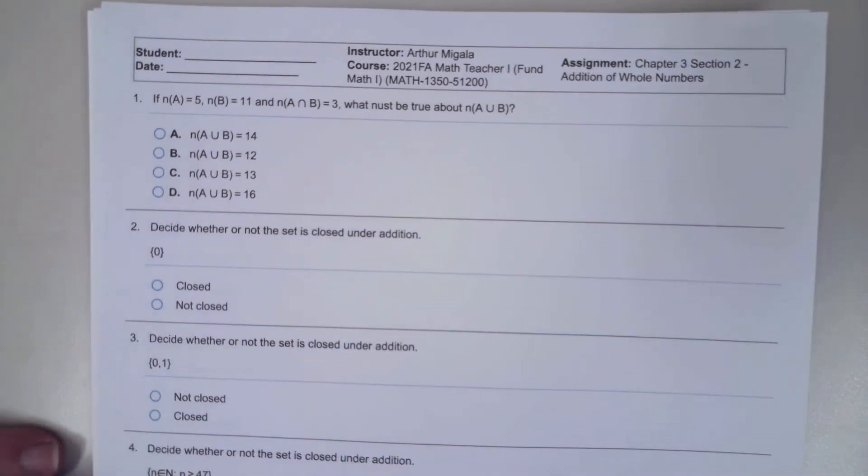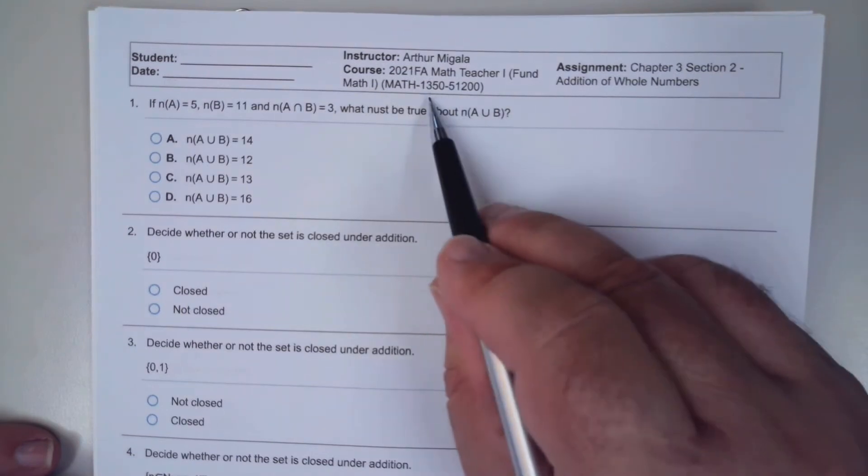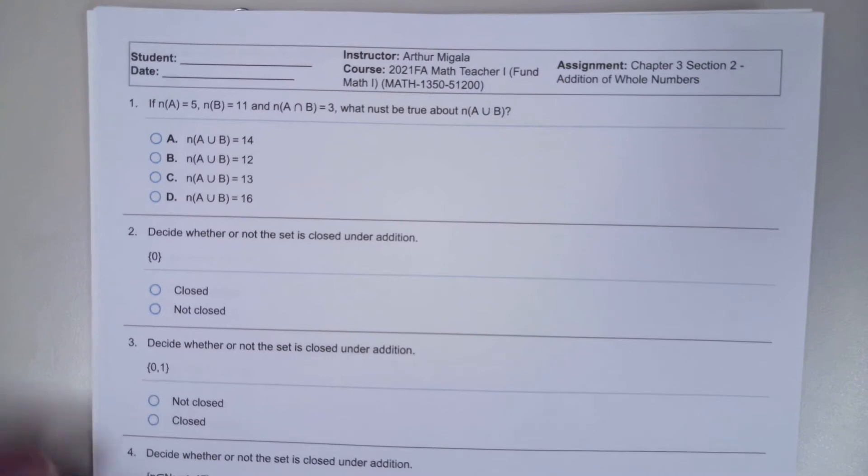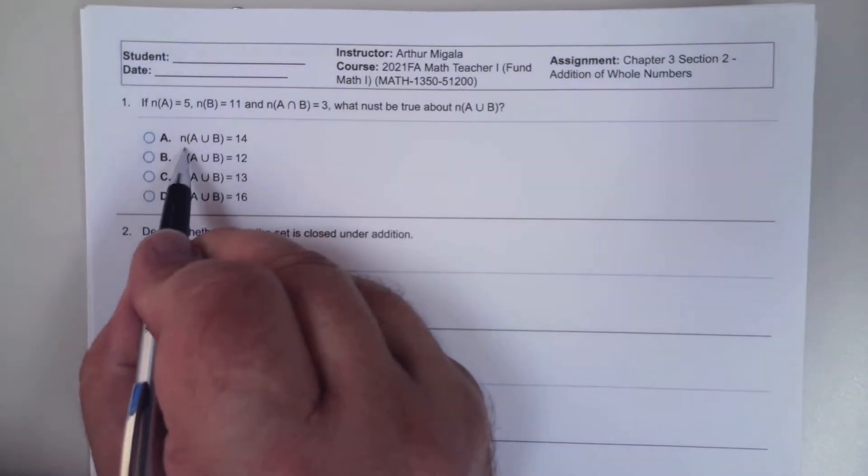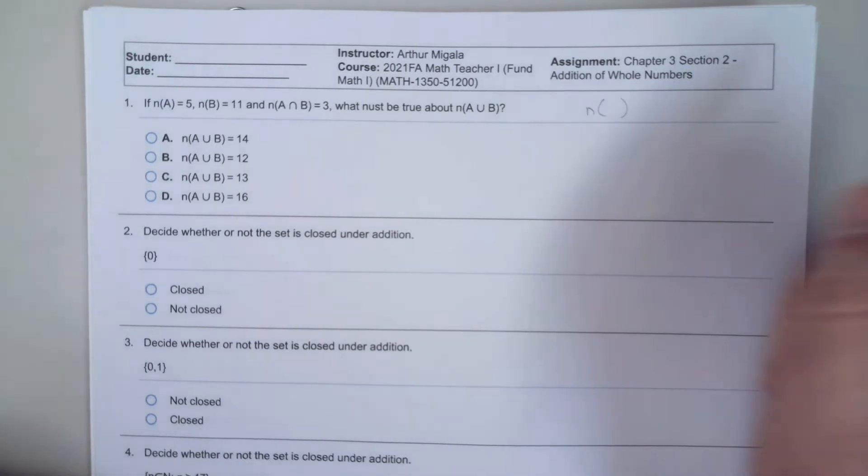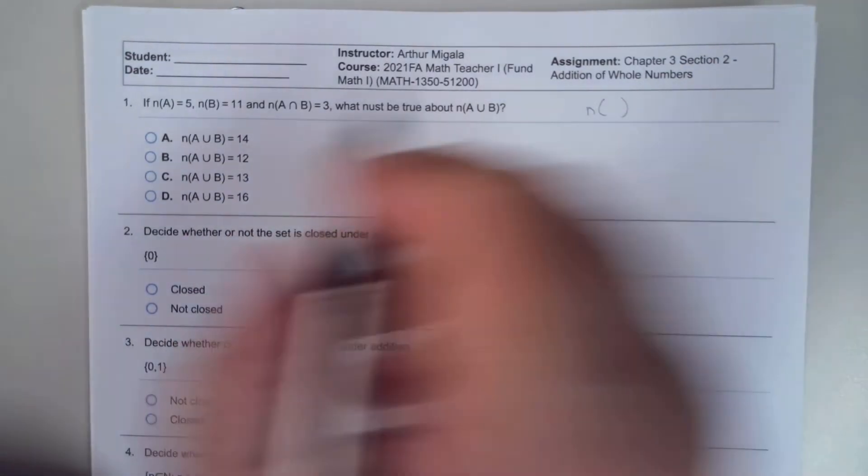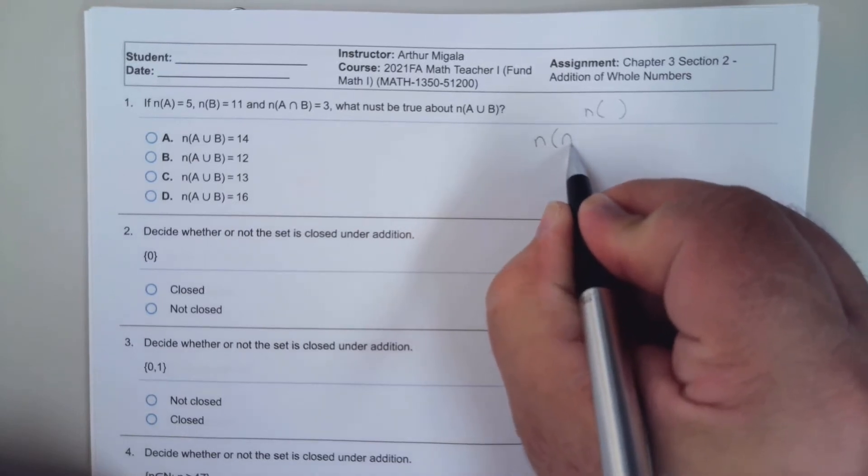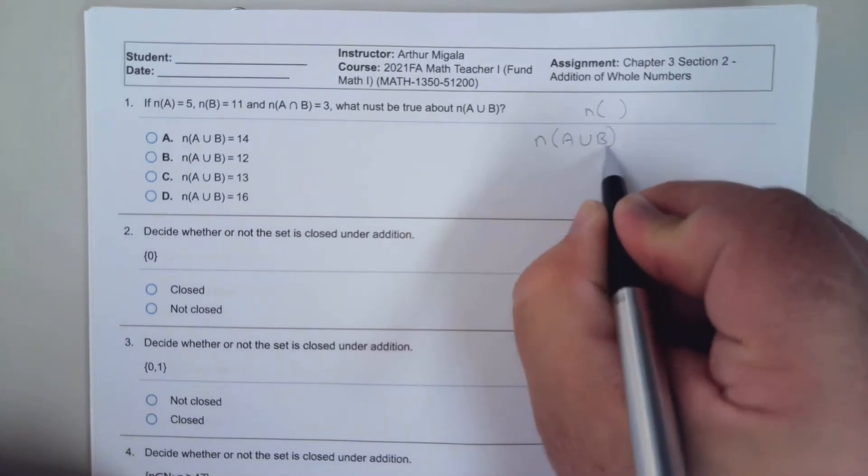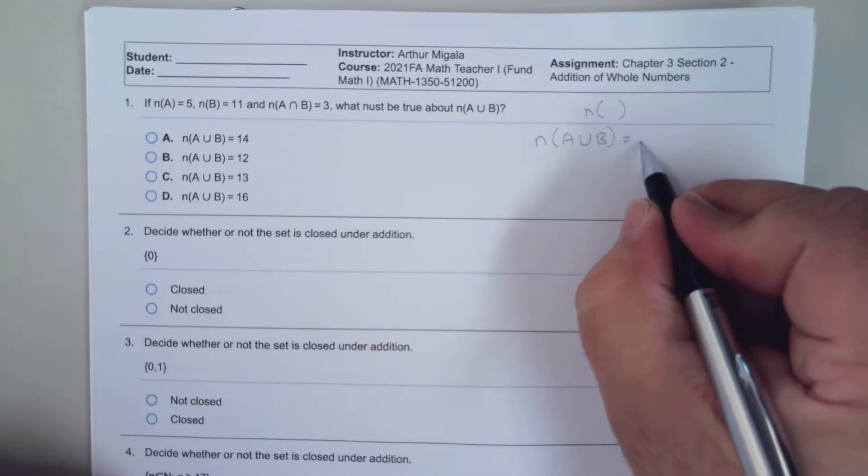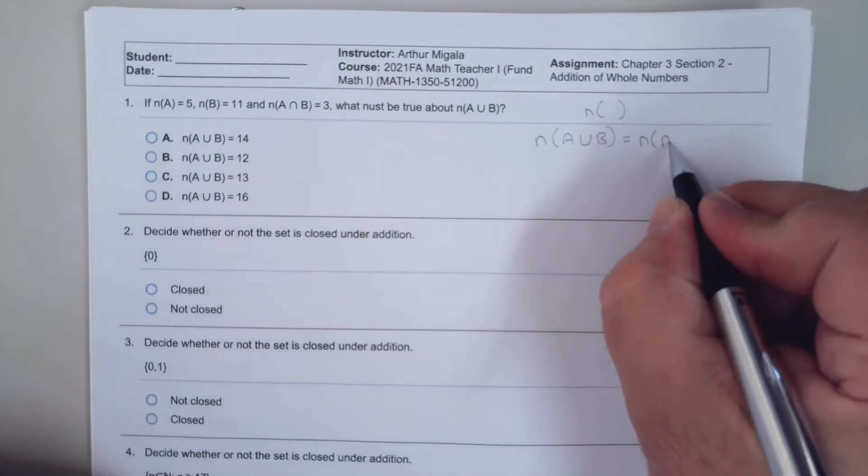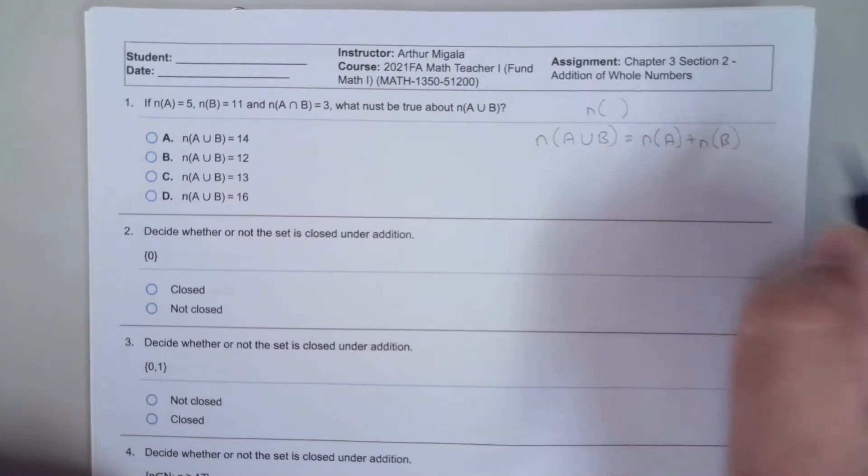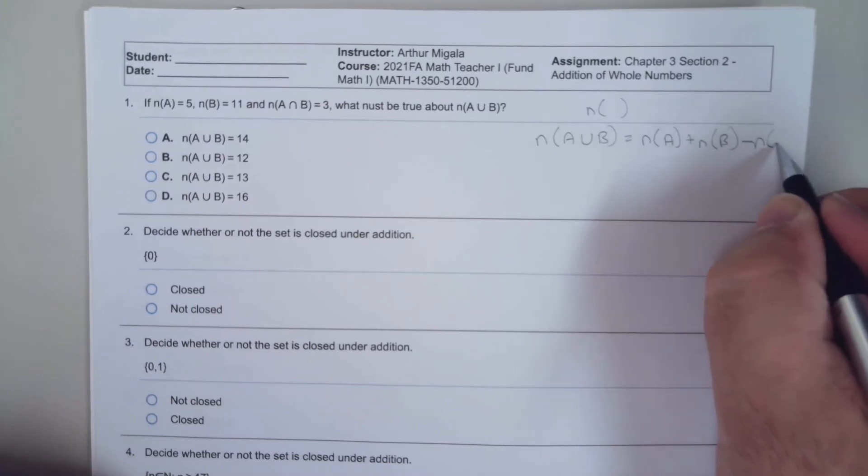Alright, here we are with our Math 1350 Chapter 3 Section 2 homework assignments. Remember this little symbol means the cardinal number. Since we're talking about the union, there's a formula. The union of any two sets is you take the cardinality of the first number plus the cardinality of the second number and minus their intersection.